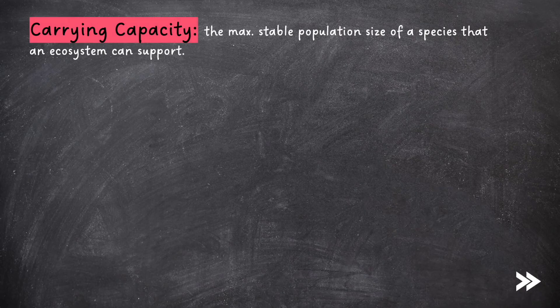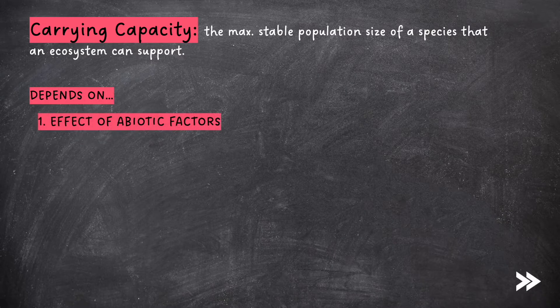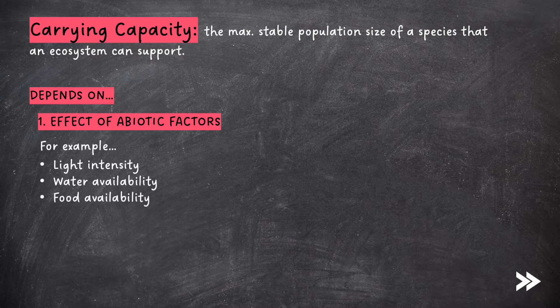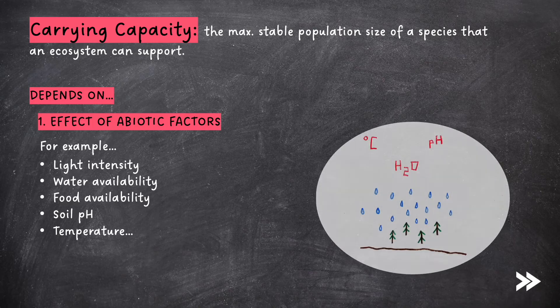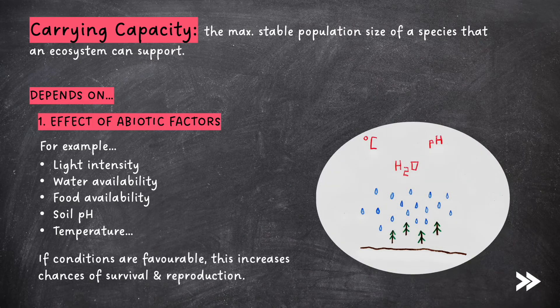Next, we need to know about the carrying capacity. This is the maximum stable population size of a species that an ecosystem can support. The carrying capacity depends on a number of factors — first, the effect of abiotic factors such as light intensity, water availability, food availability, soil pH, and temperature. If conditions are favourable, this increases the chances of survival and reproduction, increasing the carrying capacity.